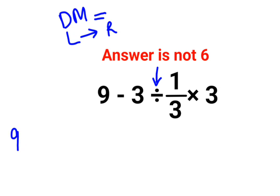So we will keep 9 minus as it is. And we have division over here. For division, you will always follow the rule of KCF. K stands for keeping the 3 as it is. C stands for changing the division sign to multiplication. And F stands for flipping or taking reciprocal of 1 upon 3, which is 3 multiplied by 3.